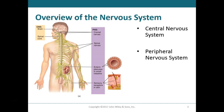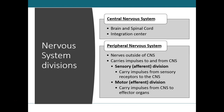The peripheral nervous system includes all of the cranial and spinal nerves. The cranial nerves branch off the brain, the spinal nerves branch off the spinal cord, and there is an enteric plexus of nerves associated with the small intestine, as well as sensory receptors located in the skin. So remember: central nervous system is the brain and spinal cord, and the peripheral nervous system is everything else.